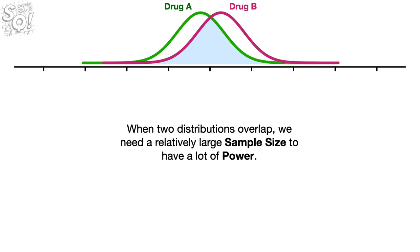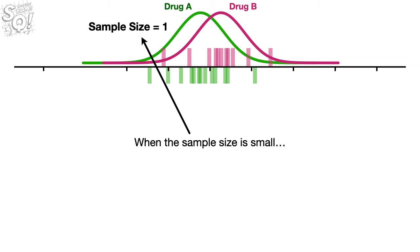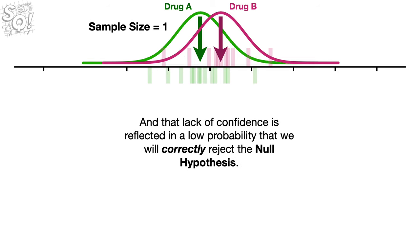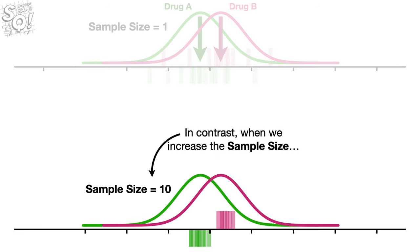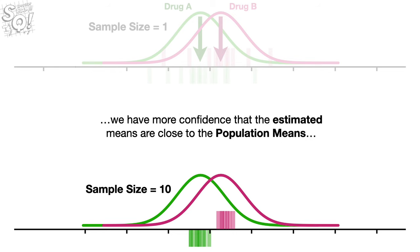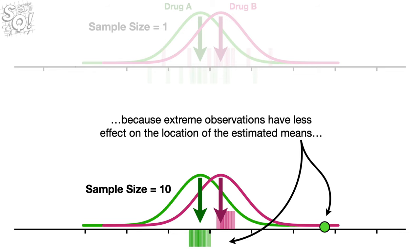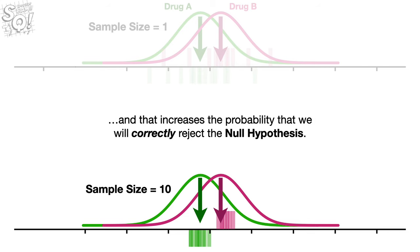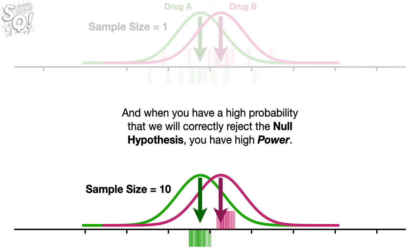In summary, when two distributions overlap, we need a relatively large sample size to have a lot of power. When the sample size is small, we have low confidence that the estimated means are close to the population means. And that lack of confidence is reflected in a low probability that we will correctly reject the null hypothesis. In contrast, when we increase the sample size, we have more confidence that the estimated means are close to the population means, because extreme observations have less effect on the location of the estimated means. And the closer the estimated means are to the population means, the less the means from the different distributions will overlap. And that increases the probability that we will correctly reject the null hypothesis. And when you have a high probability that we will correctly reject the null hypothesis, you have high power. Triple bam!